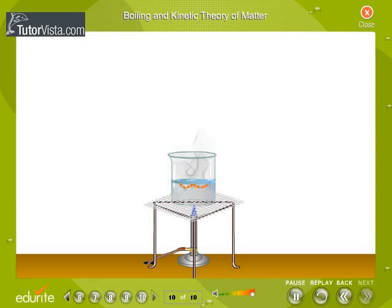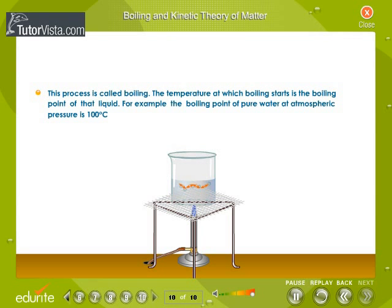Boiling and kinetic theory of matter. There is an attractive force existing between the molecules of a liquid. A molecule at the center is attracted by molecules all around. If a molecule at the surface has sufficient energy to overcome the intermolecular attraction of the liquid state, it leaves the surface and escapes. This is called evaporation. When the temperature is raised, more particles leave the surface. This is the temperature at which boiling starts — the boiling point of that liquid. At this temperature, only change of state takes place and the temperature of the liquid does not increase until all of it is converted to the vapor state.